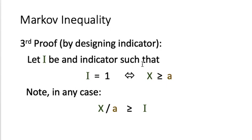We now have a third proof, using an indicator variable. Define I to be an indicator that takes values 0 and 1 only, where I equals 1 if and only if X is greater than or equal to a. So I equals 0 when X < a, and I equals 1 when X ≥ a. We observe that in every situation, X divided by a is greater than or equal to I.